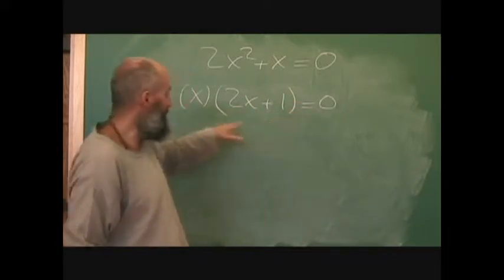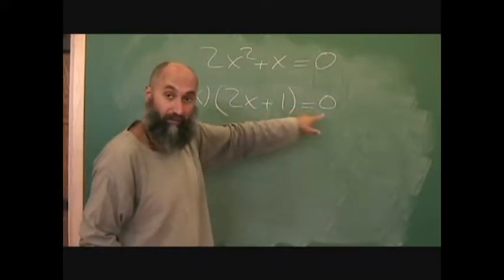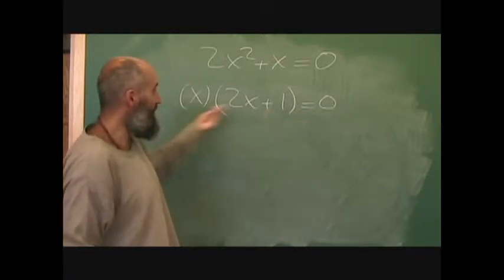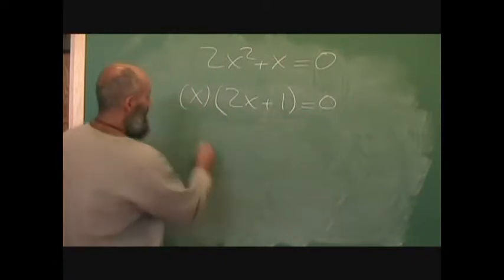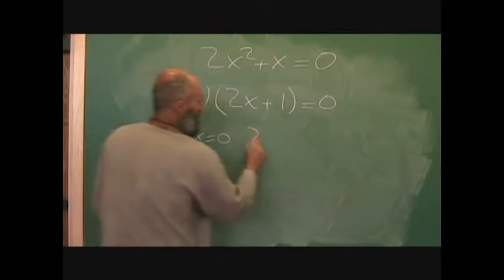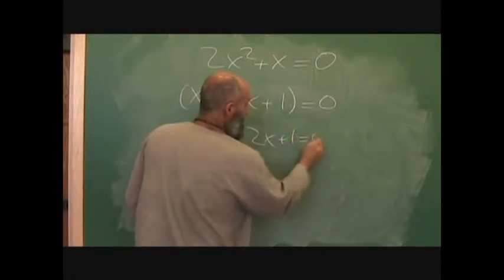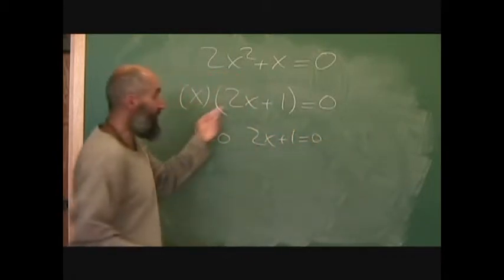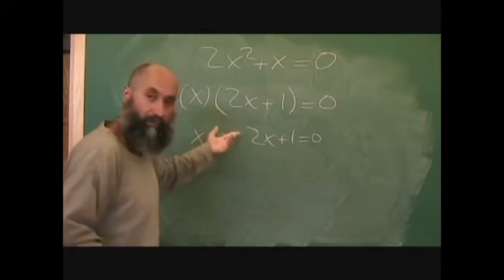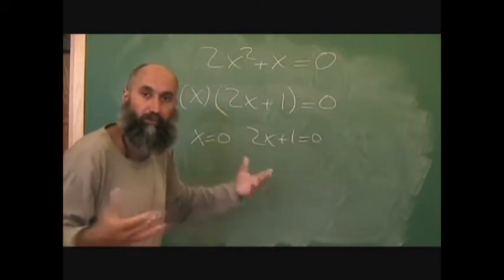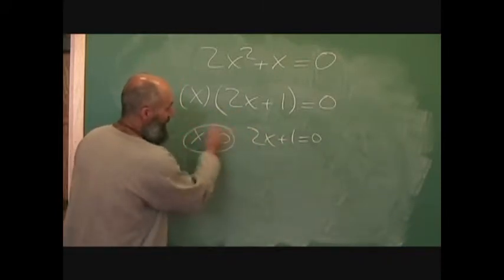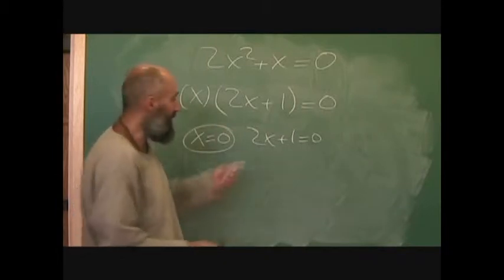As we've talked about before, if two things multiply together to give you zero, then all you do is set each one equal to zero. So x is equal to zero, and 2x plus one is equal to zero. You're solving for both of them equaling zero, because you don't know which one equals zero, so you're going to assume that both equal zero. This one is just a straight-up answer: x equals zero.